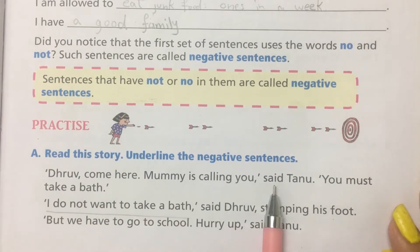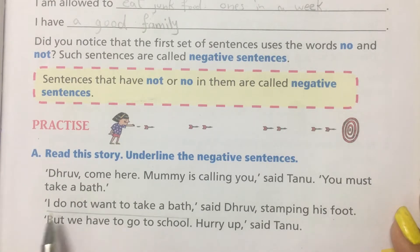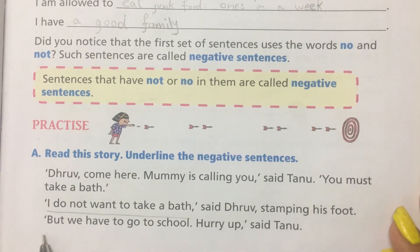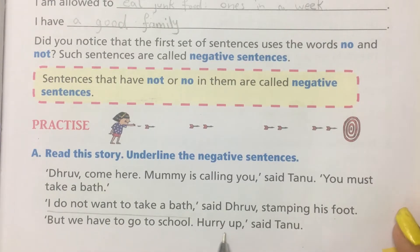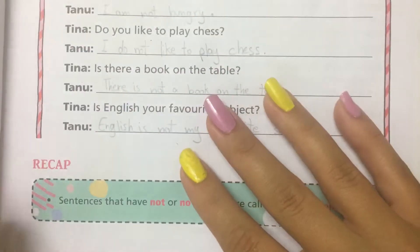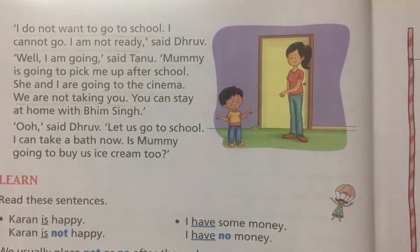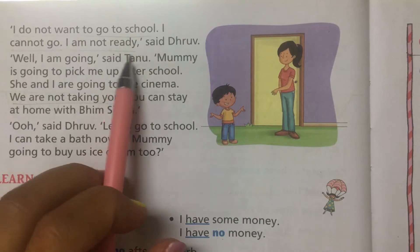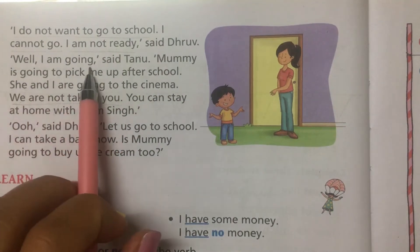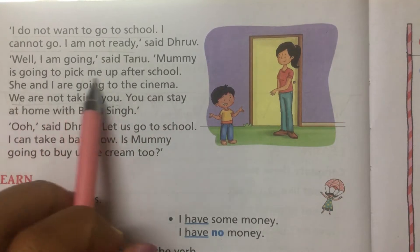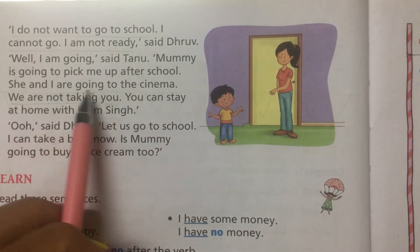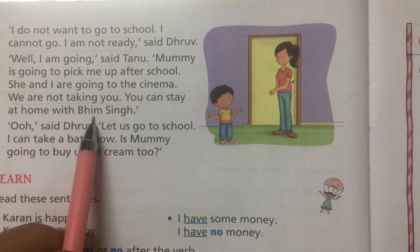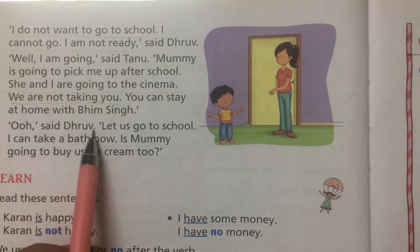Come here, Mummy is calling you, said Tanu. You must take a bath. I don't want to take a bath, said Drove, stamping his foot. But we have to go to school. Hurry up, said Tanu. I do not want to go to school. I cannot go. I am not ready, said Drove. Well, I am going, said Tanu. Mummy is going to pick me up after school. She and I are going to the cinema.